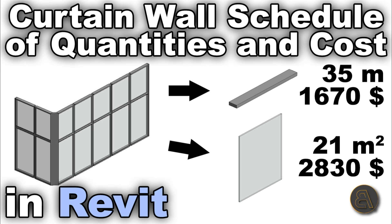What's going on guys, Balkan Architect here. In today's tutorial I'm going to be covering the topic of scheduling and calculation of cost and quantity of curtain wall elements. Curtain walls are made out of different elements — we've got mullions, the vertical ones and the horizontal ones, and then we have some panels, the glass panels. I'm going to show you how to calculate the quantity as well as the price of all of those elements for curtain walls.